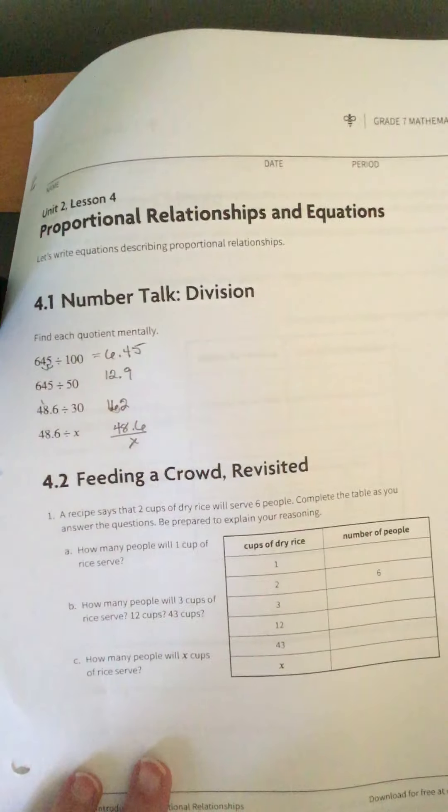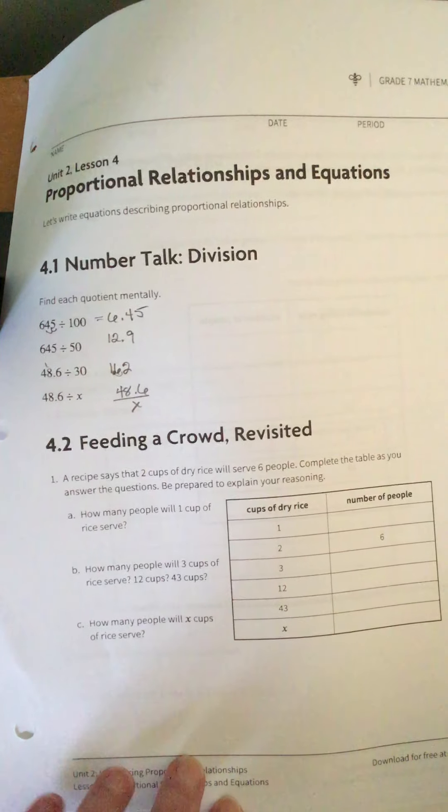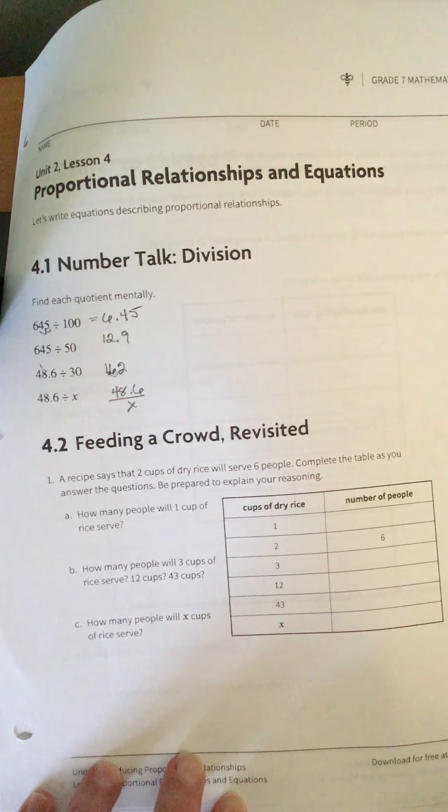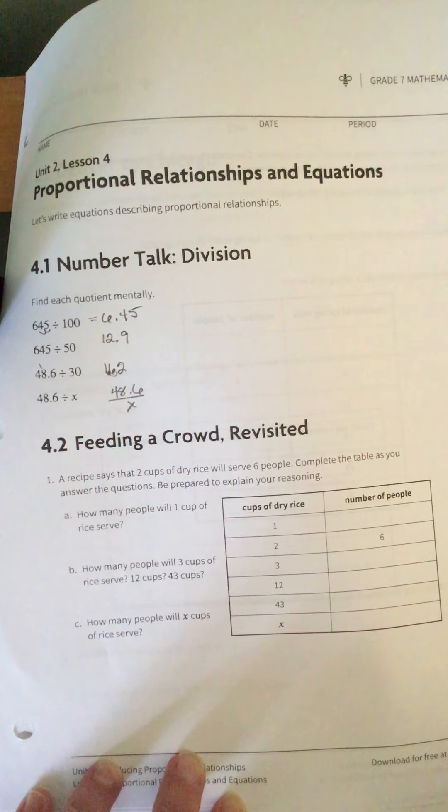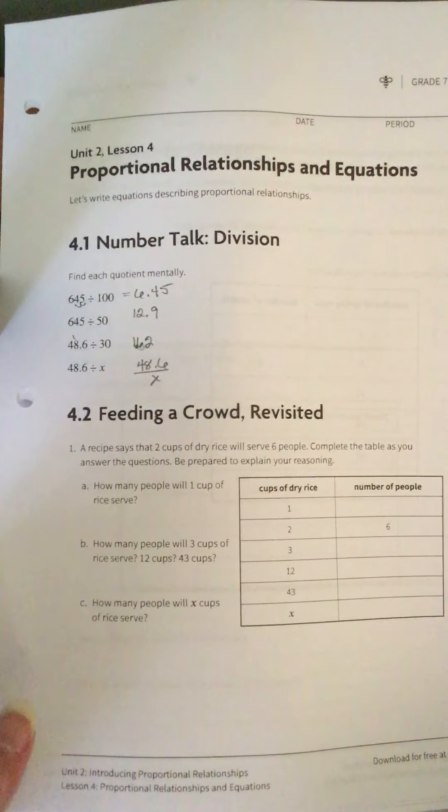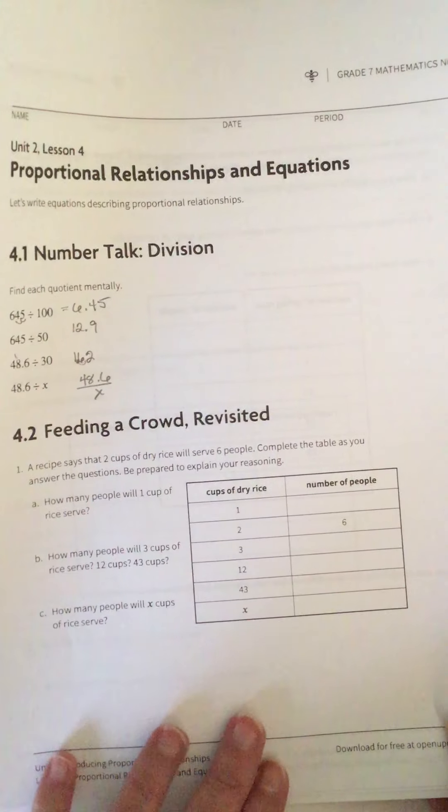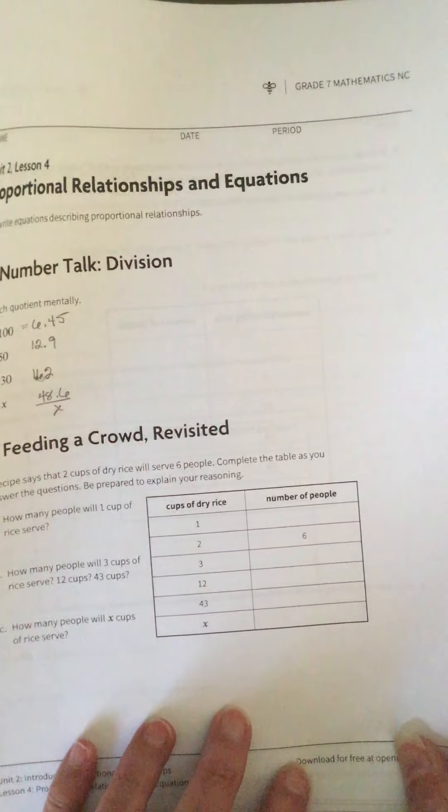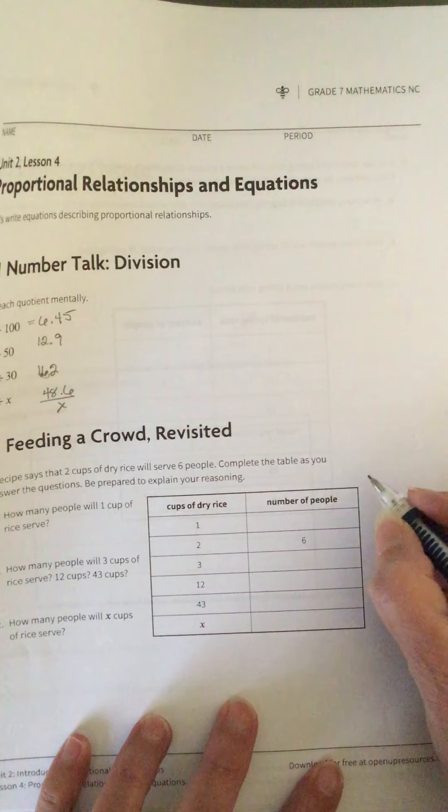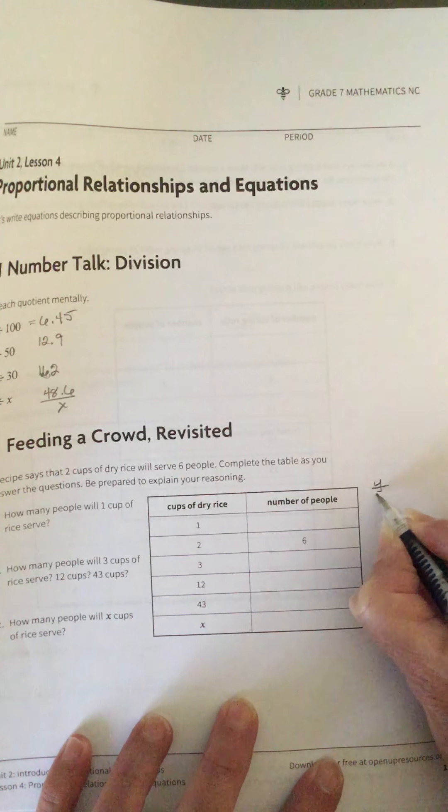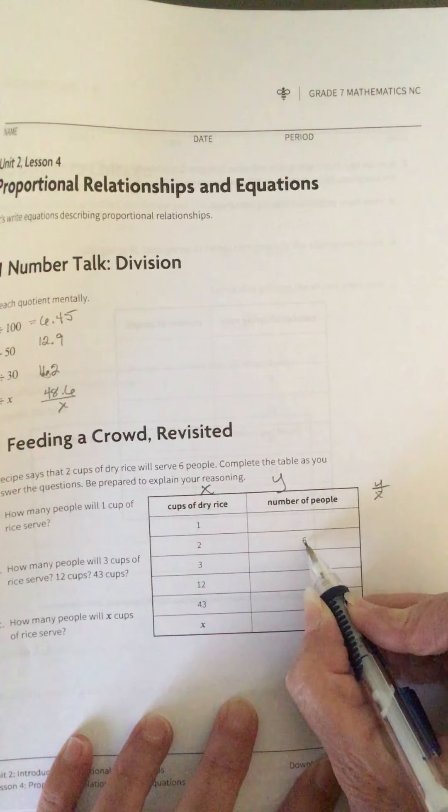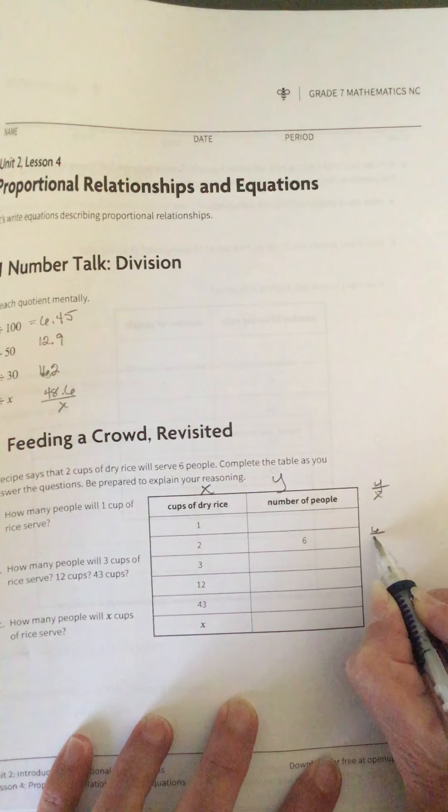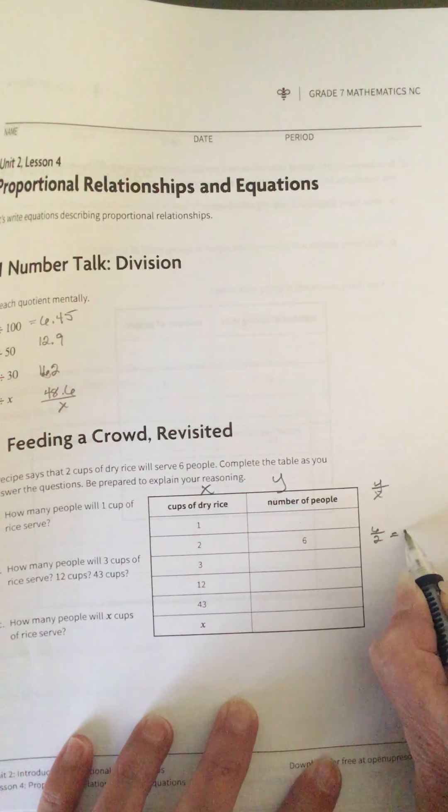Alright, so a recipe says that 2 cups of rice will feed 6 people. Oh, we've seen this problem before. Complete the table as you answer the questions. Be prepared to explain your reasoning. So how many people will 1 cup serve, 3, 12, 43, and X cups? So we're going to go back to our table, and we're going to do our Y over X again. This is X, this is Y. We don't have anything here.